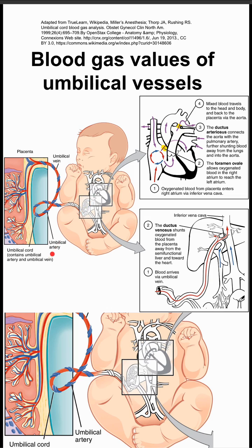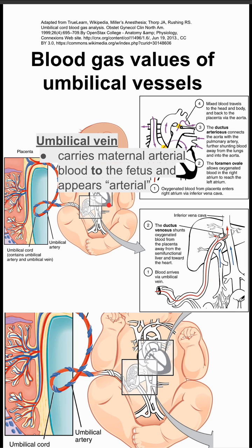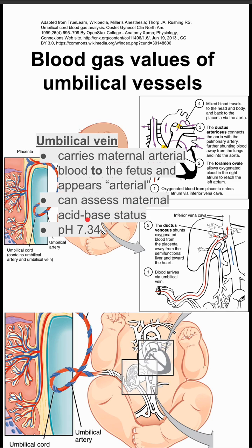So the umbilical artery is going to be moving away from the heart and will be deoxygenated blood, whereas the umbilical vein will be oxygenated blood moving toward the heart and also toward the rest of the circulation. The umbilical vein carries maternal arterial blood to the fetus and appears arterial. This can be used to assess the maternal acid-base status.